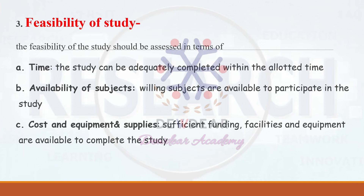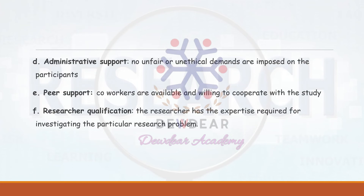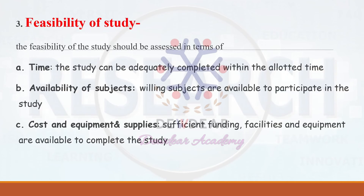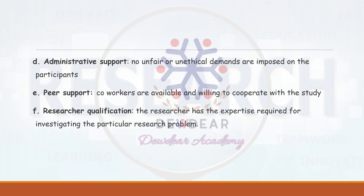Cost, equipment, and supplies means sufficient funding, facilities, and equipment are available to complete the study. Additional feasibility factors include administrative support — meaning no unfair or unethical demands are imposed on participants — and peer support, meaning co-workers are available and willing to cooperate. Researcher qualification is also important: the researcher must have the expertise required to investigate the particular research problem.